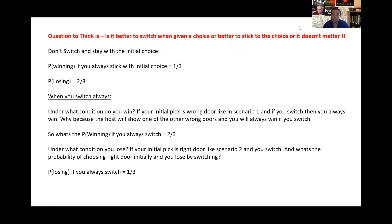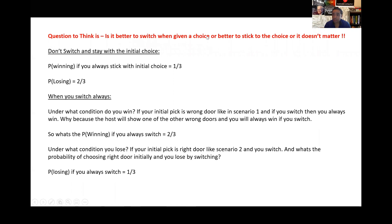Your probability of winning when you always switch is two-thirds. Under what condition will you lose? If your initial pick is the right door — like scenario two — and you switch, you lose. The probability of having chosen the right door initially and then losing by switching is one-third. So the deduction is: your probability of winning is always higher when you always switch, and if you don't switch your probability of winning is only one-third. This is the Monty Hall problem, and there is a lot of debate and theory around it — you can find much more research available on the internet.